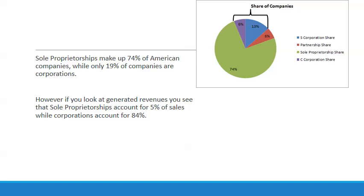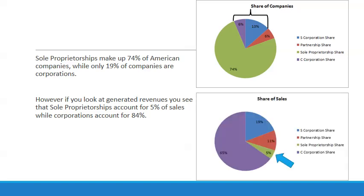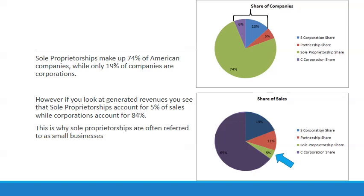If you look at generated revenues, sole proprietorships account for 5% of sales, whereas corporations account for 84%. Even though the majority of companies are sole proprietorships, they don't generate much revenue in terms of the share of sales within the United States. Corporations like Apple and Microsoft do that. This is why sole proprietorships are often referred to as small businesses.